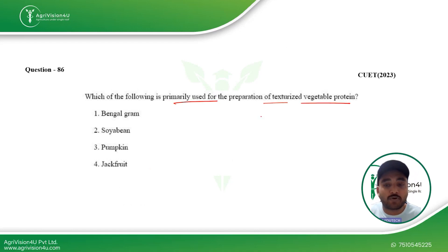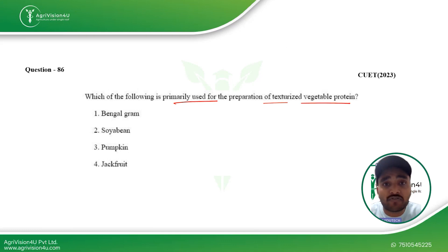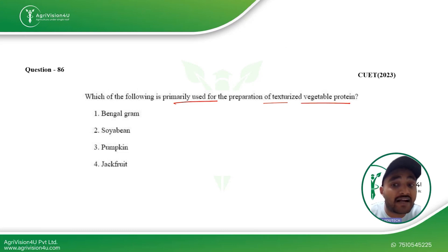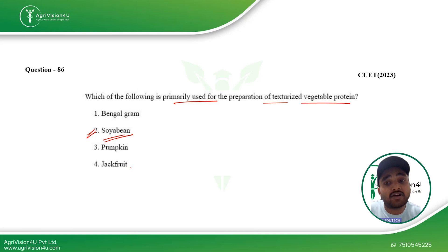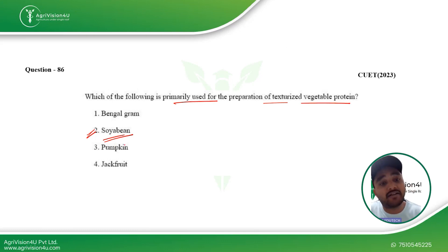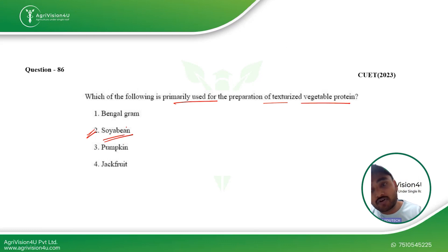Which of the following is primarily used in the preparation of texturized vegetable protein? This is a current research topic, and many companies are now investing heavily in texturized vegetable protein and plant-based meats. Soybean is the ideal source — soy chops are very common in markets. Jackfruit can be used in some cases due to its fibrous appearance similar to meat fibers, but soybean is far more suitable. The second option is the right answer.